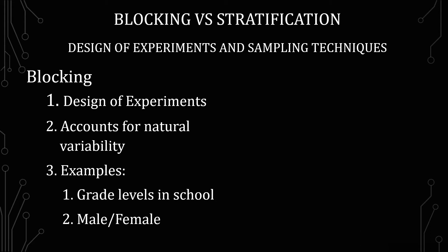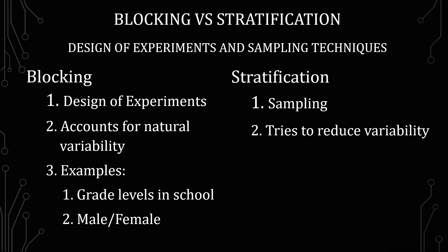The blocks will usually be obvious, and you'll be able to categorize people into those blocks in their totality — obviously, you wouldn't have someone in both 6th grade and 7th grade. Now, stratification is about sampling, and what it does is try to reduce variability. So instead of accounting for natural variability in an experiment design, because we're talking about sampling, you're trying to reduce variability, usually by a type of sampling method.